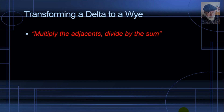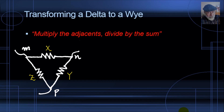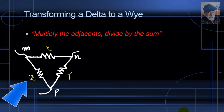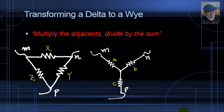Sometimes, if we take a delta and convert it into a Y, we can all of a sudden apply the simplifications we saw in previous videos. How do we transform a delta into an equivalent Y? Take a delta of three resistors X, Y, and Z in ohms between nodes M, N, and P, and replace it by an equivalent Y connected to the same nodes M, N, and P with values A ohms, B ohms, and C ohms. We need to compute A, B, and C in terms of X, Y, and Z.